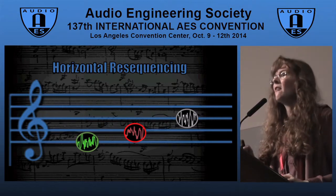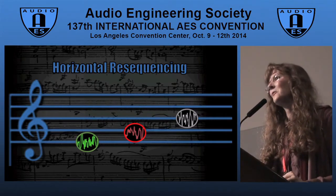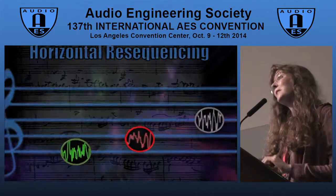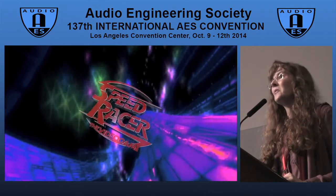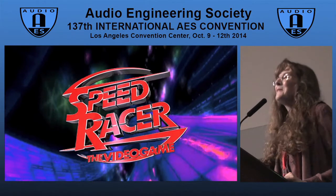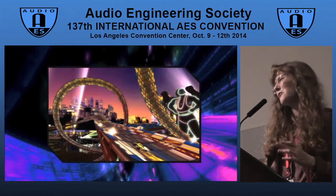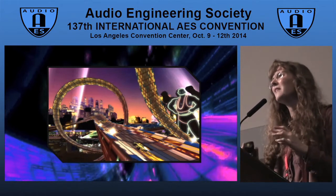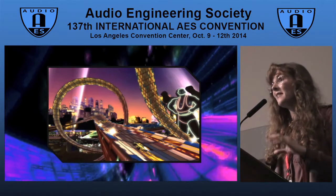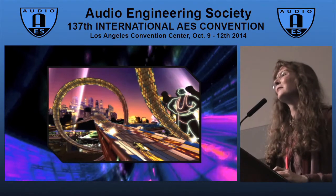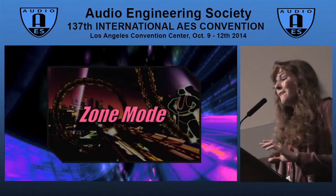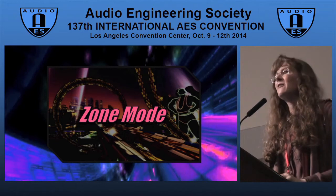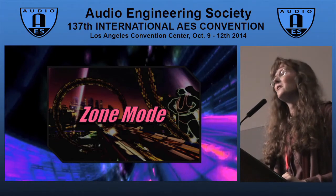Let's examine a fairly straightforward horizontal re-sequencing model as it was used in one of my own projects — the Speed Racer video game from Warner Bros. Interactive. In Speed Racer, players get to drive futuristic cars at over 350 miles per hour down Hot Wheels-style tracks that twist into loop-de-loops and impossible curves. Every so often, players can enter what's called a zone mode, during which they're suddenly invincible and traveling much, much faster than normal.